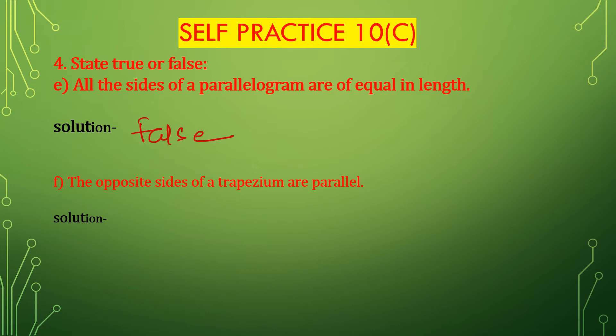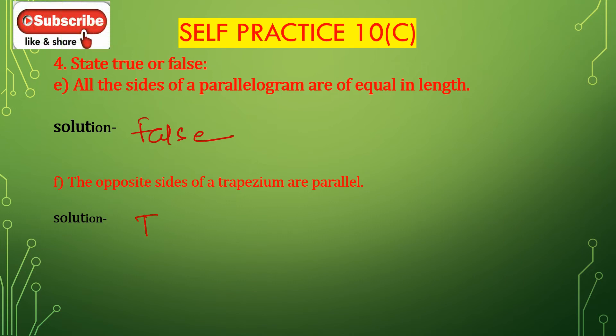Bit F: the opposite sides of a trapezium are parallel. Opposite sides of a trapezium are parallel — only one side is parallel. So this is false. Only one pair of sides is parallel in a trapezium.